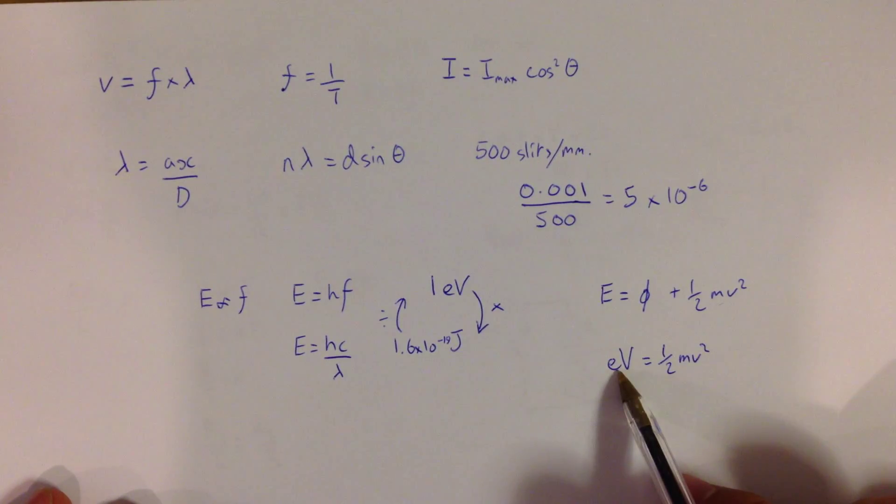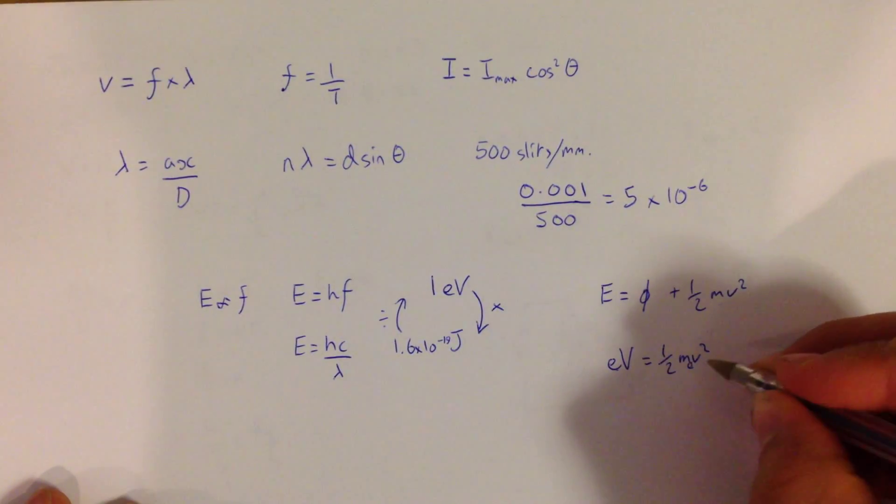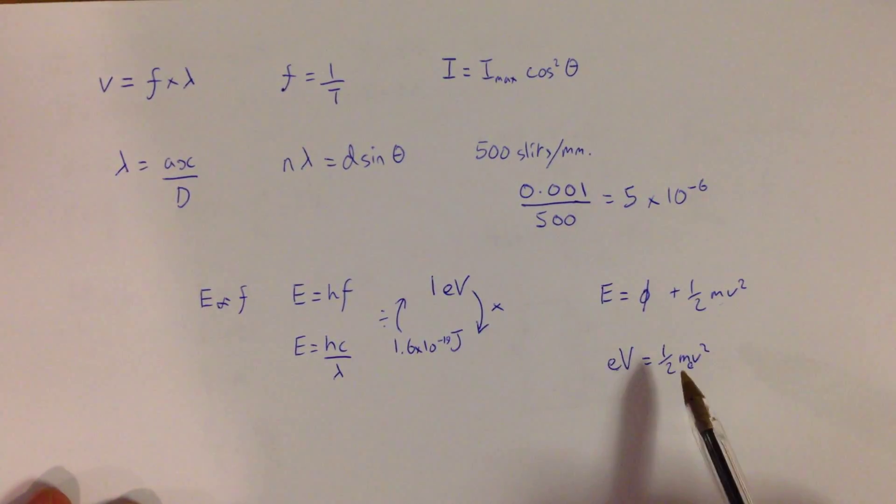So if you're given a potential difference, you automatically know the velocity of the electron, because E is constant, the charge on an electron, and M is the mass of the electron, which again is given to you in the data book. So if you know one of these, you automatically know the other.